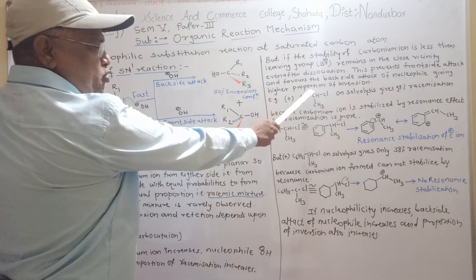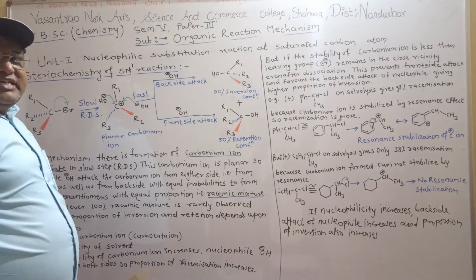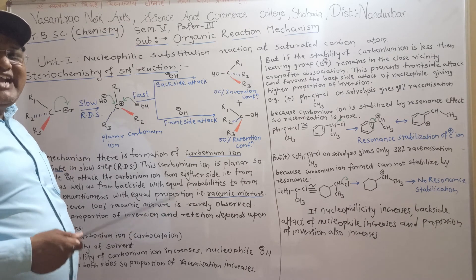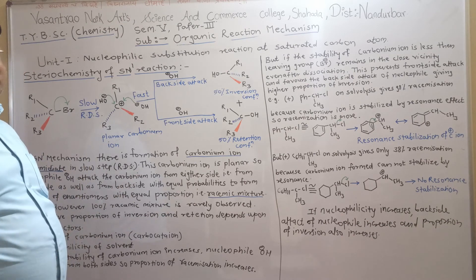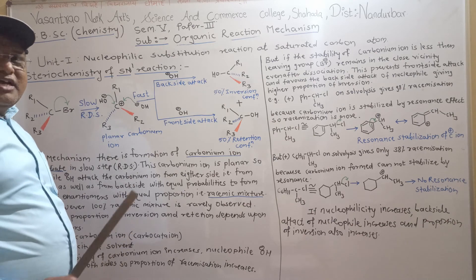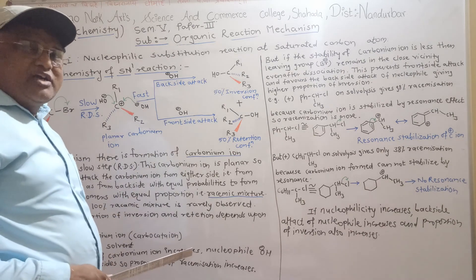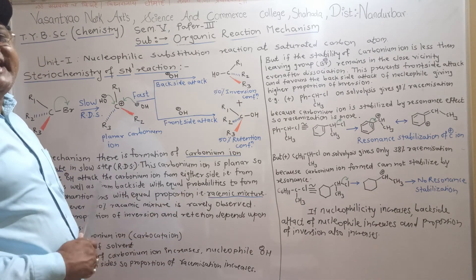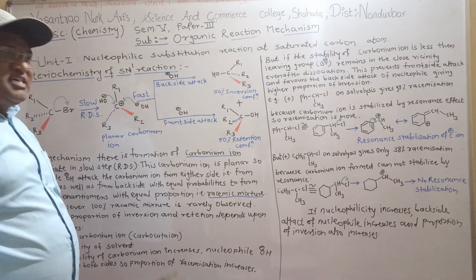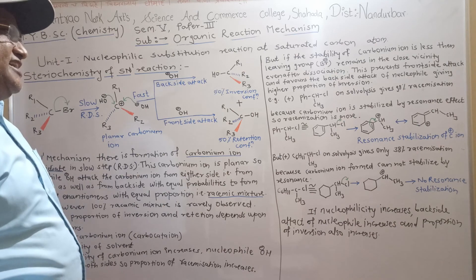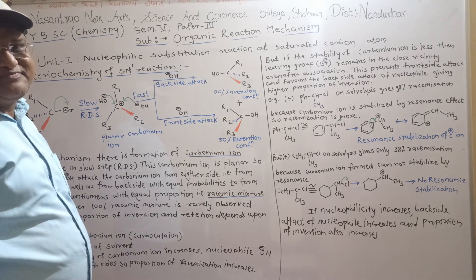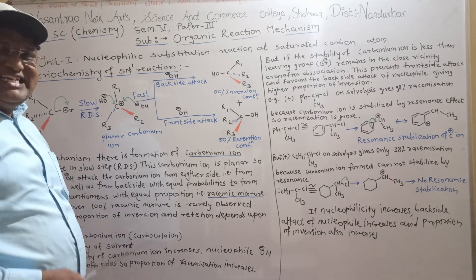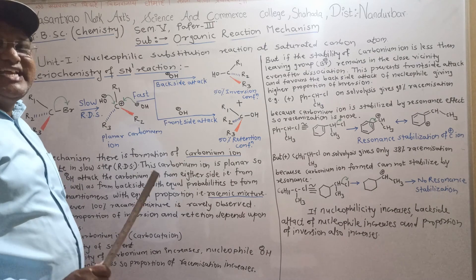For example, for 1-phenyl-1-chloro-ethane, if solvolysis is carried out in 20% water and 80% acetone, we get 98% racemization. But in the presence of 80% water, we get nearly 80% inversion of configuration. Because the nucleophilicity of water is greater than that of acetone, and hence in the case of water we get 80% inversion of configuration.